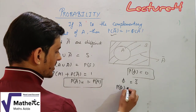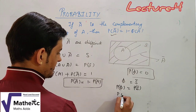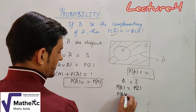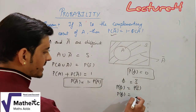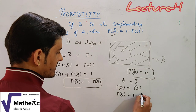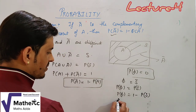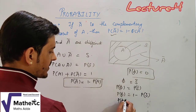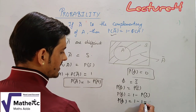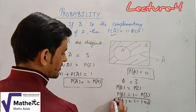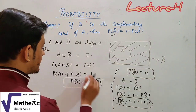Applying the axioms: probability of A union A-bar equals probability of A plus probability of A-bar, which equals probability of S equals 1. Therefore, probability of A-bar equals 1 minus probability of A. This proves the complementary probability formula. The probability of the empty set is 0. You can use this approach to prove similar results.